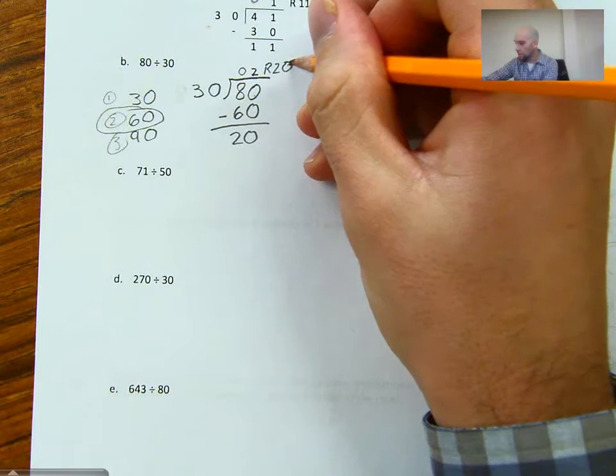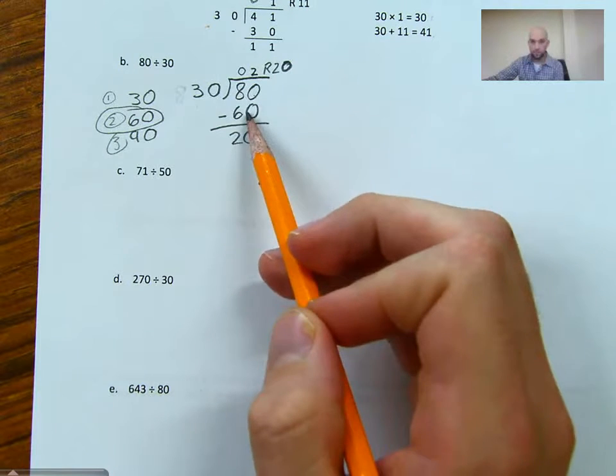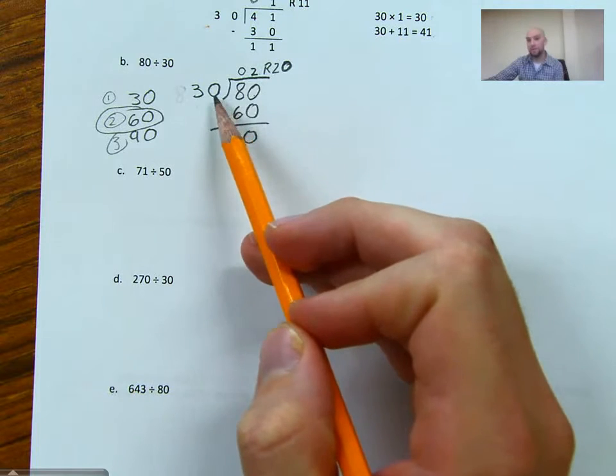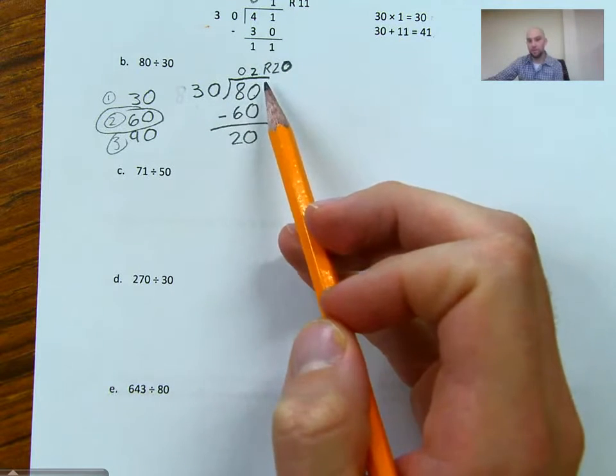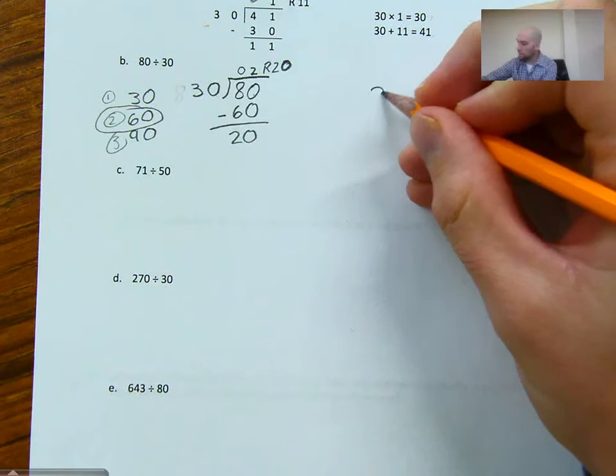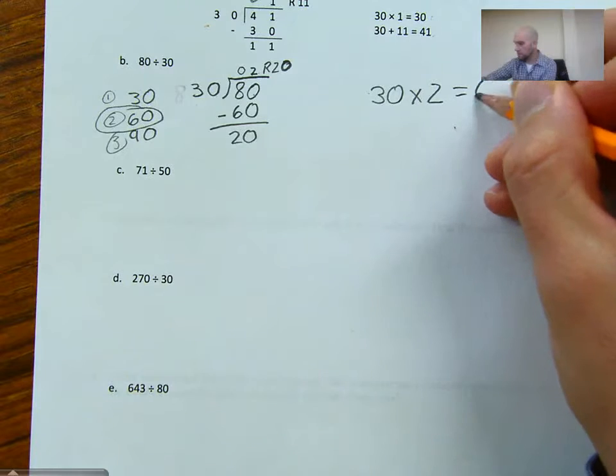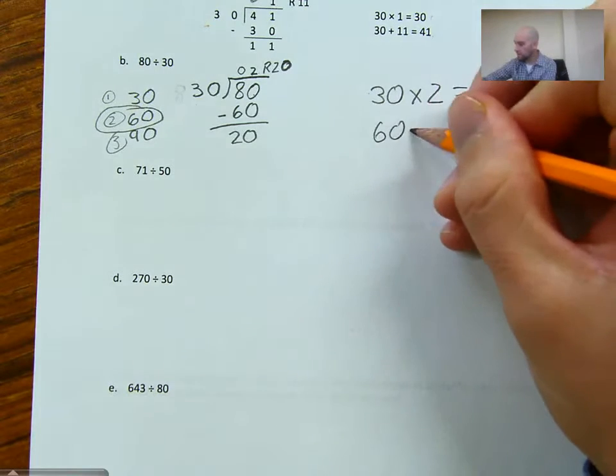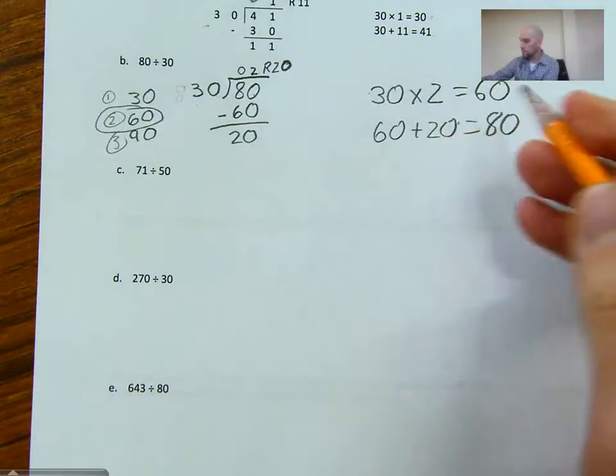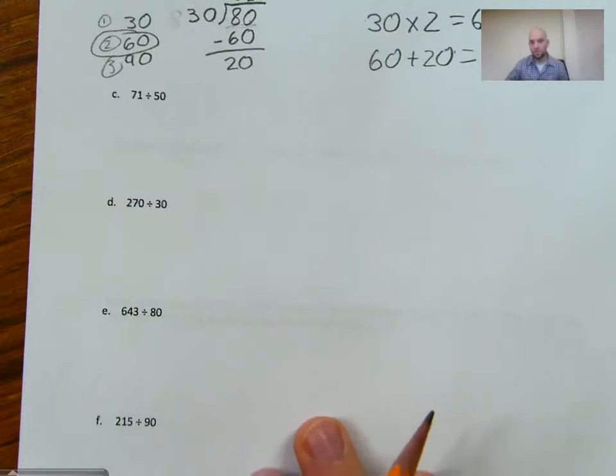Now, if we want to check our work, we're going to multiply our quotient right here, our answer, by our divisor. And then we add our remainder and we should get our dividend. So if we do 30 times 2, we get 60. And then 60 plus 20, and we get 80. And 80 is our dividend.